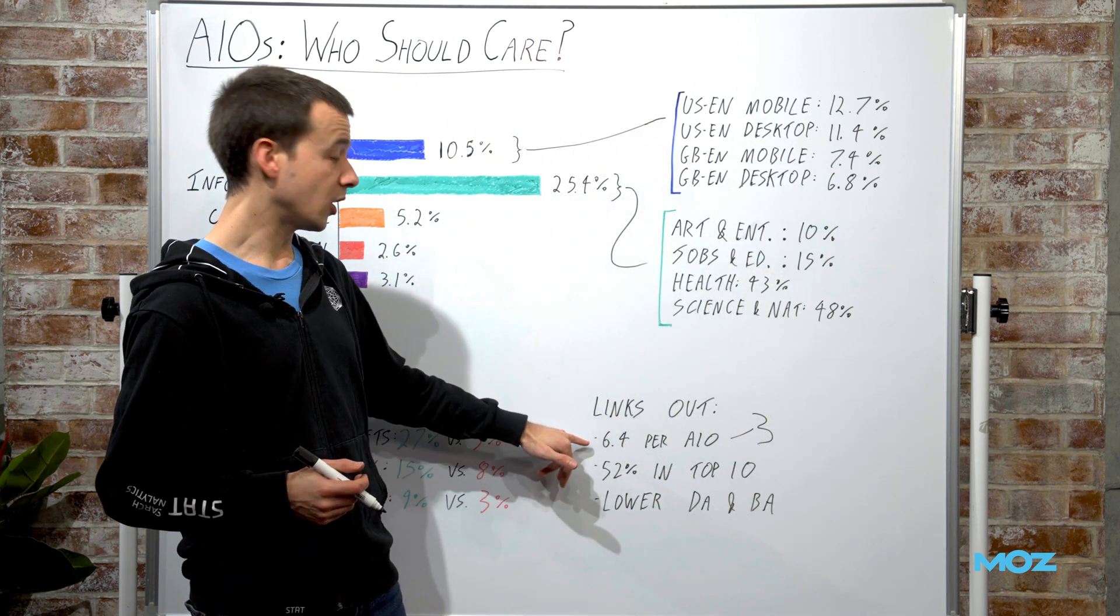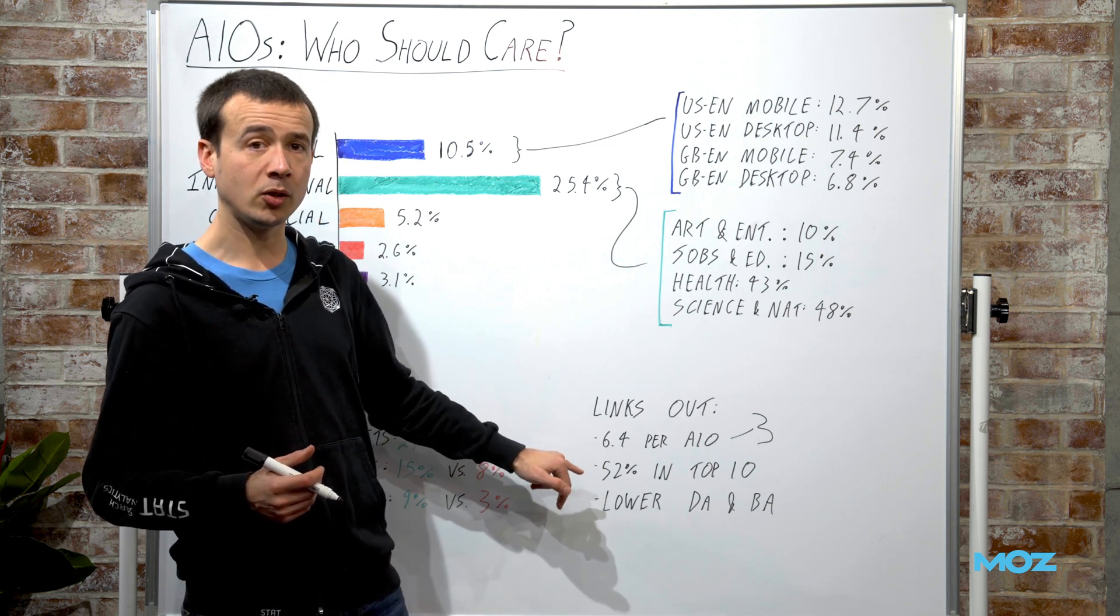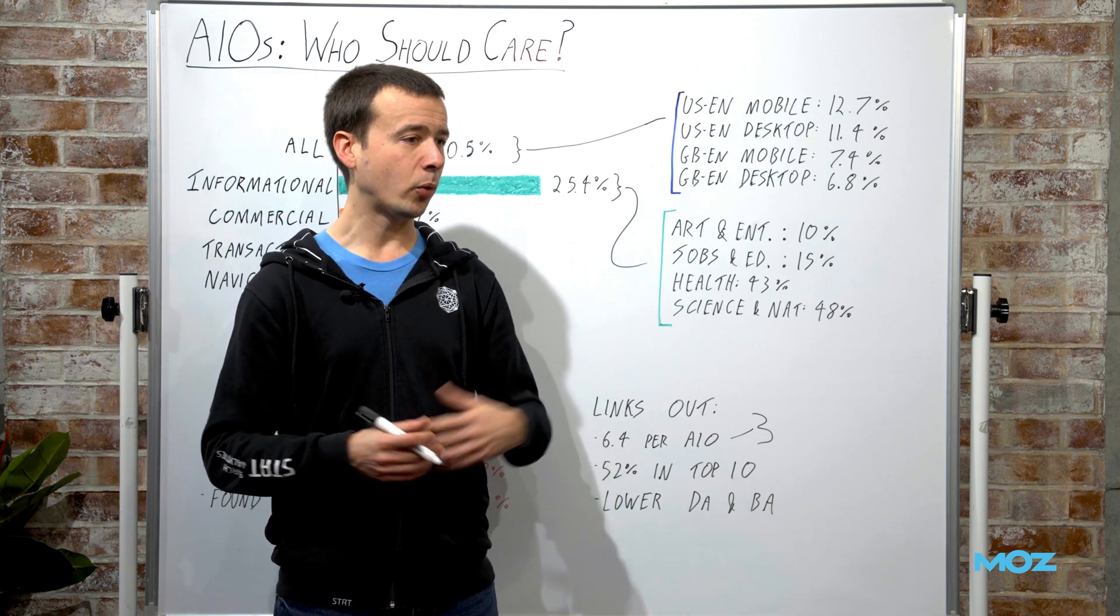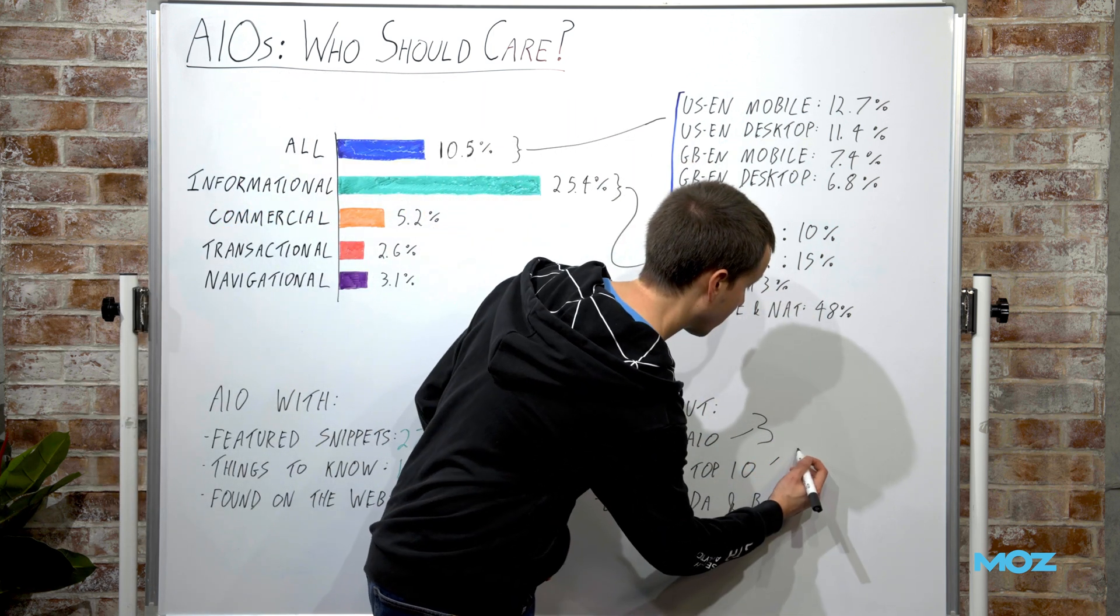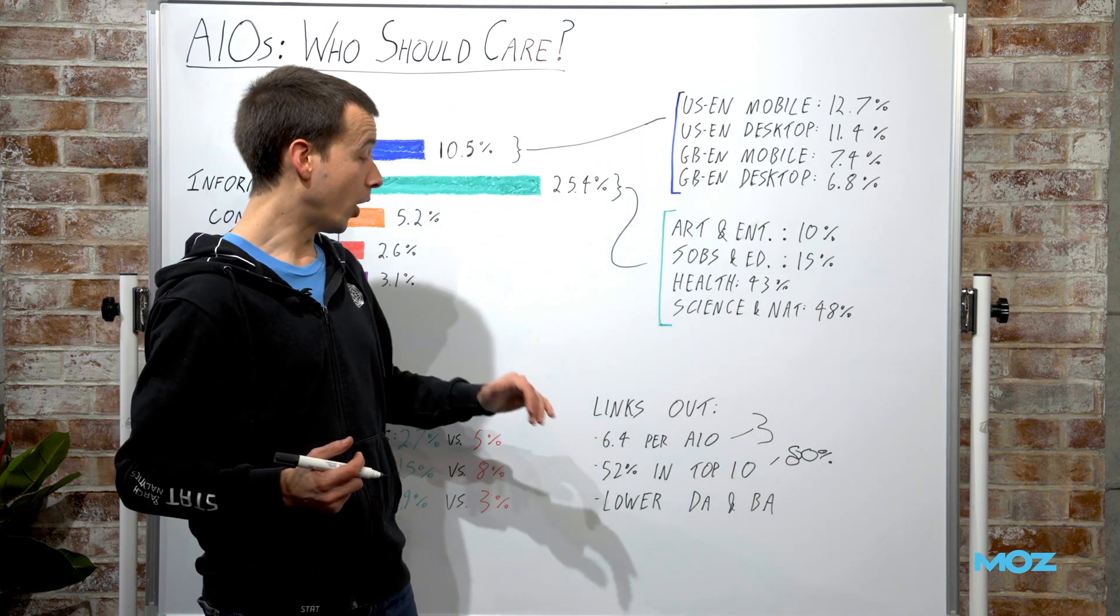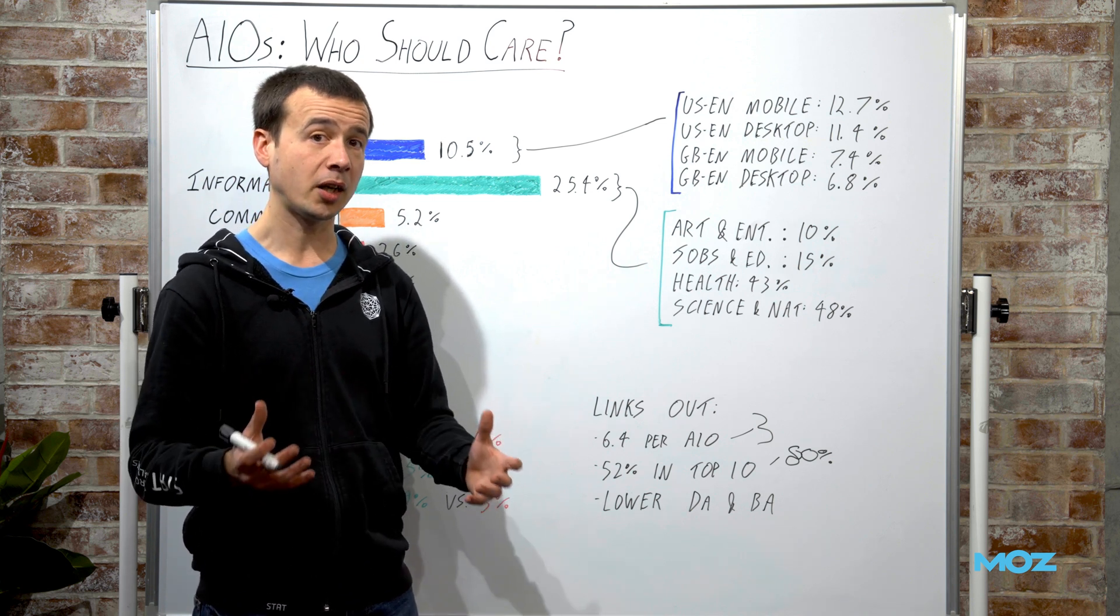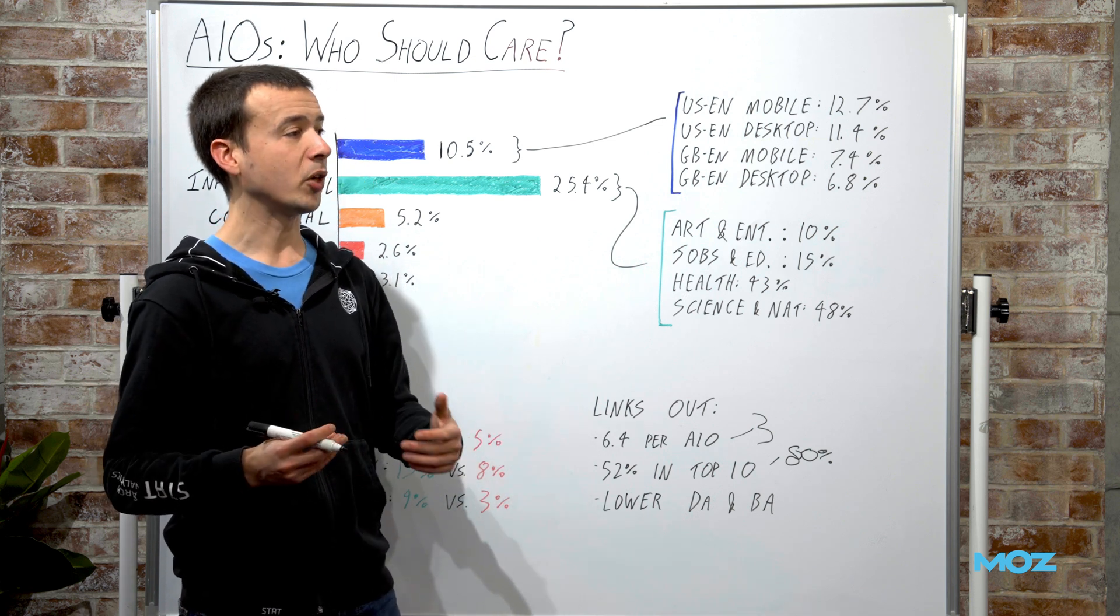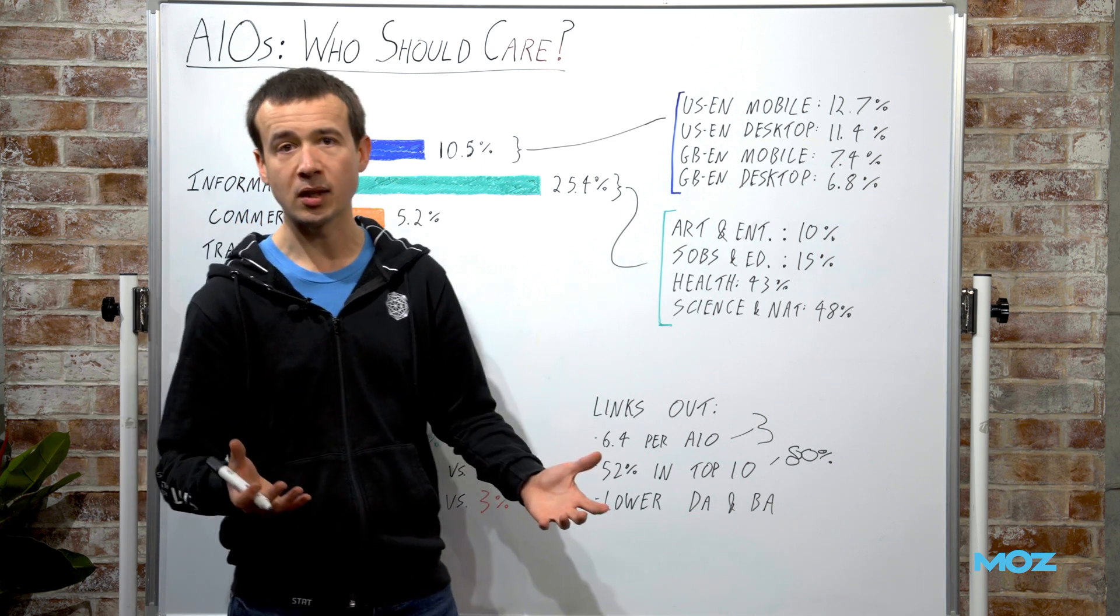If we look at these 6.4 links out, only about 52% of those will also be ranking in the organic top 10 on the same keyword. That's quite a low overlap with regular organic. That suggests that maybe your regular SEO strategies aren't going to work. But if we only look at the preview links, that goes up to more like 80%. If we're only interested in those preview links, which are the most visually obvious and the most direct click through, you have a much stronger correlation with regular organic ranking.